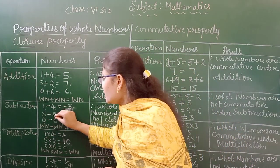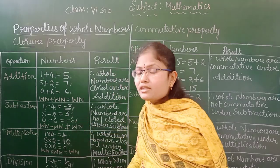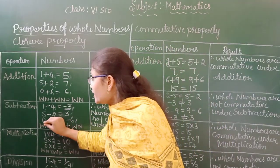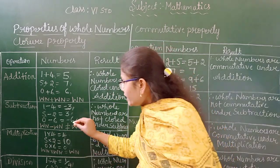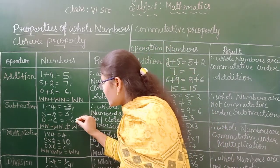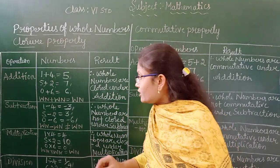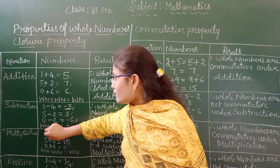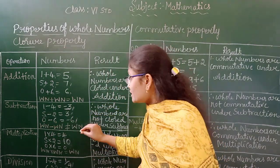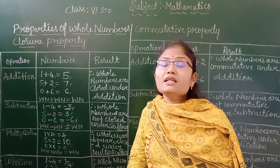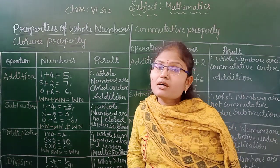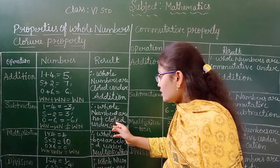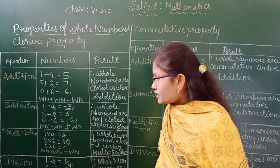5 minus 2 equals 3, which is a whole number. But 0 minus 6 gives minus 6, which is a negative number. So if you subtract whole numbers, the result may sometimes be a whole number and sometimes not. We conclude that whole numbers are not closed under subtraction.